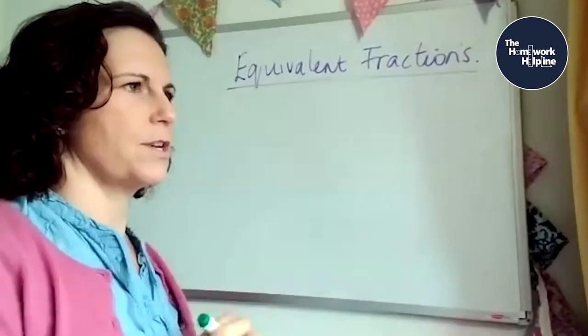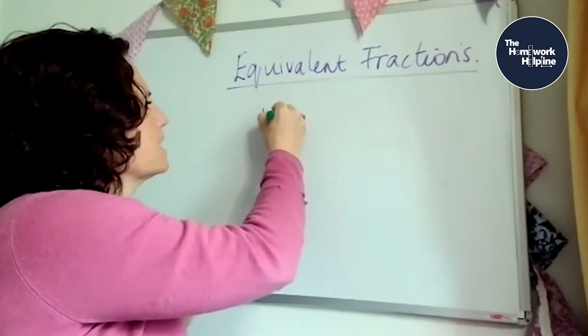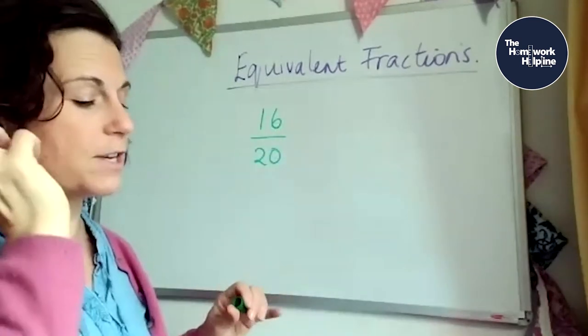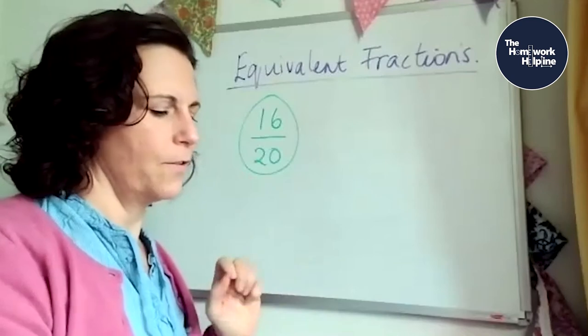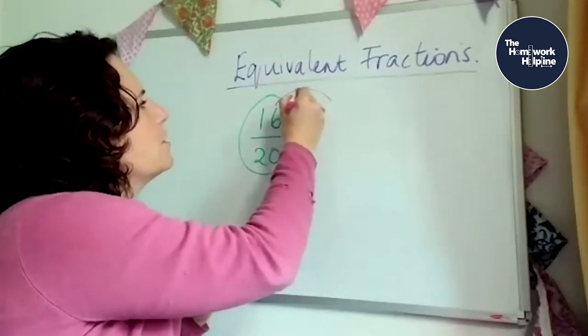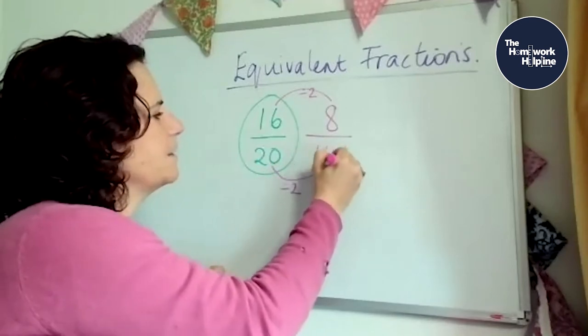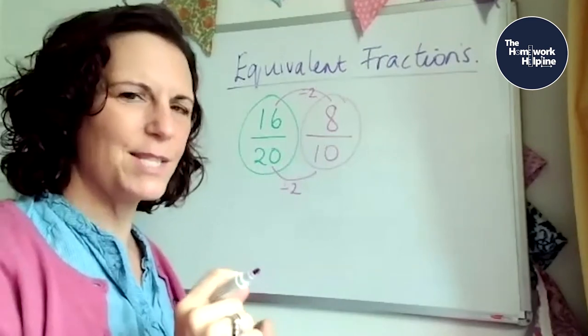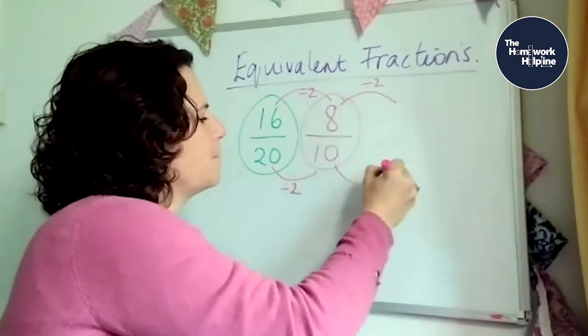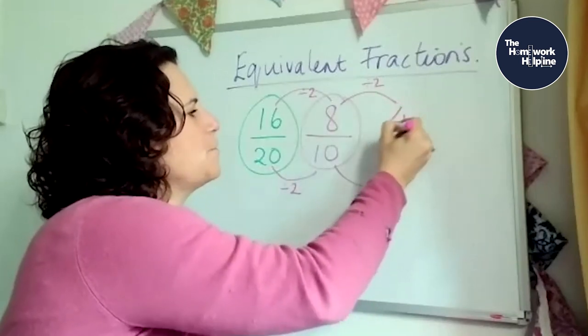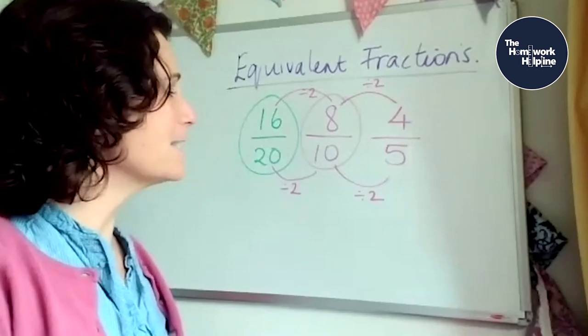You might need to do it two or three times. So we could have if I had 16 20ths, very similar to the last one we did actually, but 16 20ths. You can say, right, 16 and 20, easy peasy, they both divide by two. So let's divide them both by two. So we can draw one arch divided by two, 16 divided by two is eight, and 20 divided by two is 10. Now, we've got eight tenths. Is that in its smallest terms yet? No, it's not, because we can divide them both by two again. So we're going to divide that one by two again, and that one by two again. And so eight divided by two is four, and 10 divided by two is five. Four fifths. We can't go any further than that.